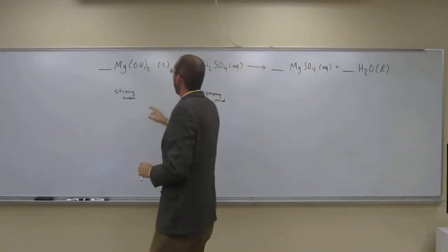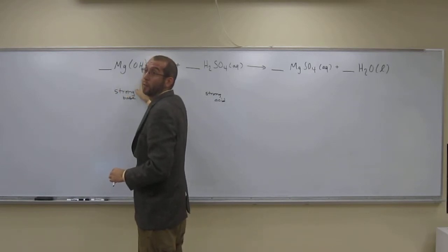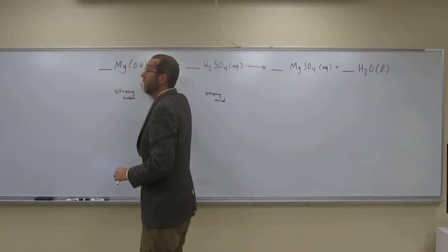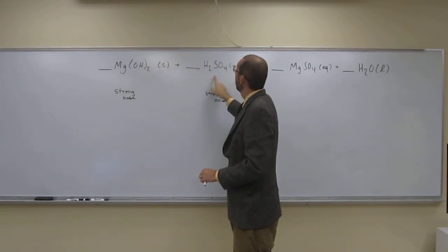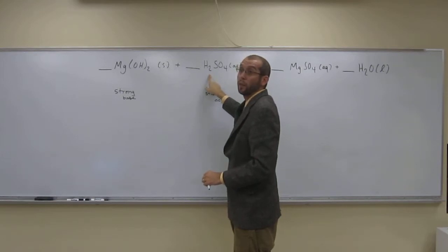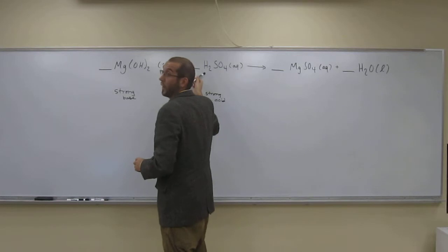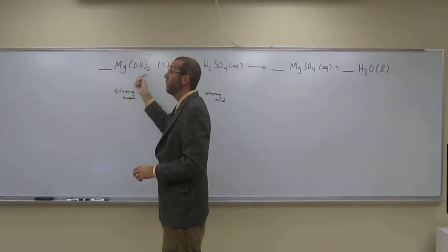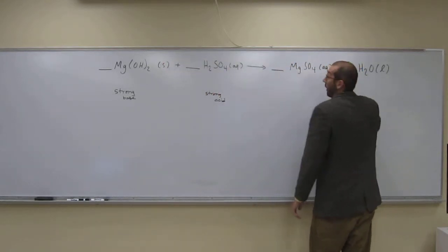So, how does it form water? The OHs here—how many OHs do we have here in magnesium hydroxide? Two of them, right? The OHs there will react with the Hs from the strong acid. How many Hs do we have here? Two. So we have OH plus H, right? That's H2O. So we have two of those, two OHs plus H. That's how many waters we're going to make there.